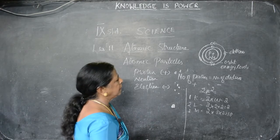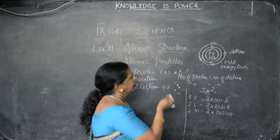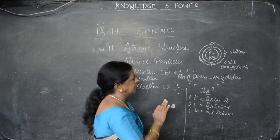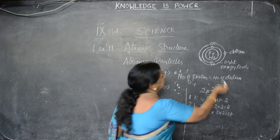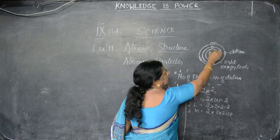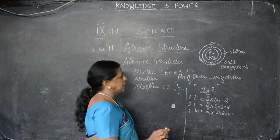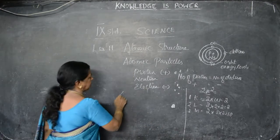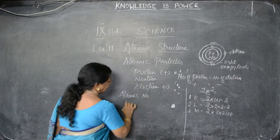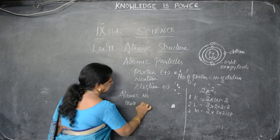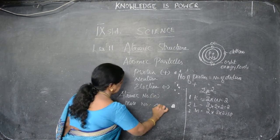Every orbit also has sub-orbits, which we will see in the 10th standard. Otherwise we can say the entire weight of the nucleus is the weight of the atom. An atom has two numbers: one is the atomic number and the other is the mass number. Atomic number is Z; mass number is A.